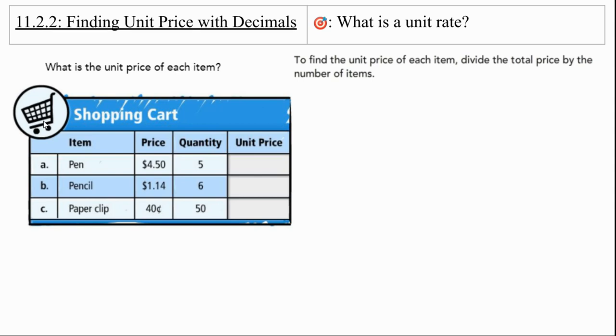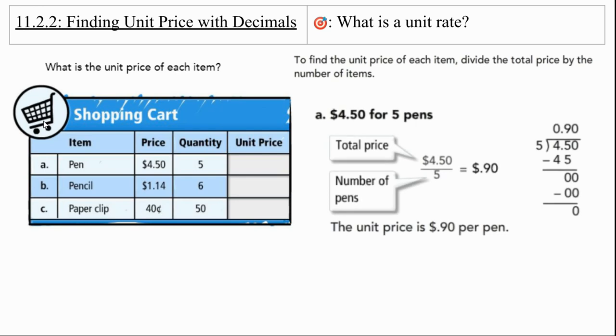Let's practice a little bit with decimals. So remember, you could always use a calculator on these. To find the unit price of each item, divide the total price by the number of items. See how this table is set up and make sure you're setting up your tables the same way. Go price first, then quantity, and it will remind you to divide it in that way. Looking at the first one, $4.50 for five pens. So the price over the quantity, that's going to be 90 cents per pen.